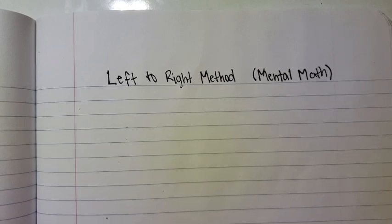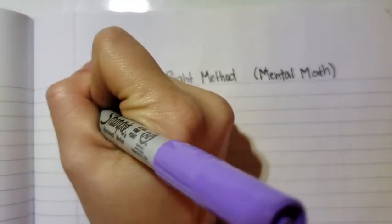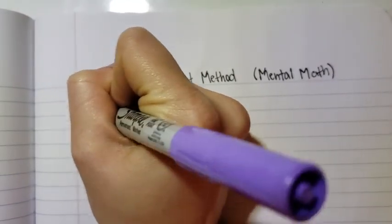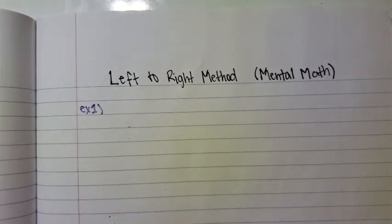I am doing the exact three same examples as the traditional right-to-left method and as the Singapore method, so you're able to see the same problems worked out but just three different ways.